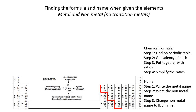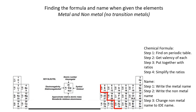In this lesson, we are going to take a metal and a non-metal. Here's an example: let's take Na and O. We're going to learn how to write the chemical formula and also how to work out the name.